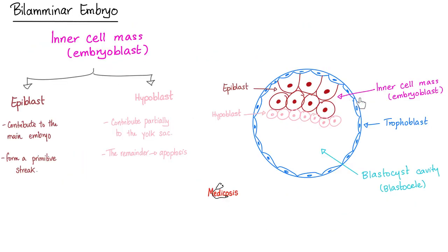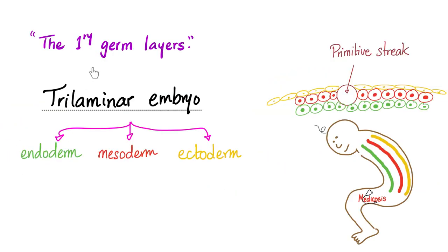The bilaminar embryo — you have inner cell mass and the outer trophoblast. The inner cell mass will give you epiblast and hypoblast. Who will become the actual embryo? Epiblast. Next you have the trilaminar embryo: endoderm, mesoderm, ectoderm.